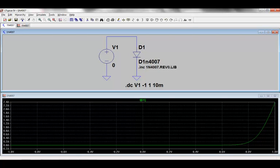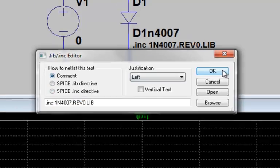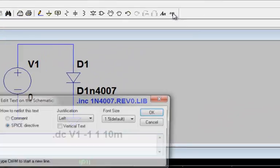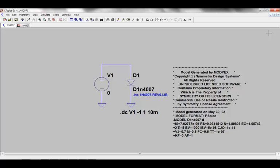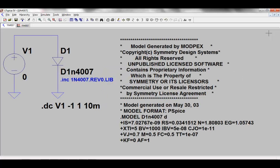Even though the .include or .lib statements allow you to reference an external third-party library file, the most portable option is to actually cut and paste the .model statement into your schematic via a SPICE directive. This makes your simulation file very portable and removes dependencies on the library file. If you do not want to paste the .model statement into your schematic, remember to always include the library file with your schematic whenever you share with another user. Otherwise, they will not be able to run your simulation.